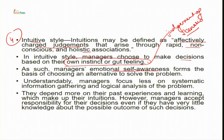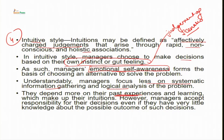Intuitive style managers choose to make decisions based on their own instincts and gut feeling — their judgment in scenarios where proper information is lacking. The manager's emotional self-awareness forms the basis of choosing an alternative to solve the problem. Managers focus less on systematic information gathering and logical analysis, relying more on past experiences and learnings that make up their intuitions. However, unlike in the dependent style, managers accept responsibility for their decisions, even with very little knowledge about possible outcomes.